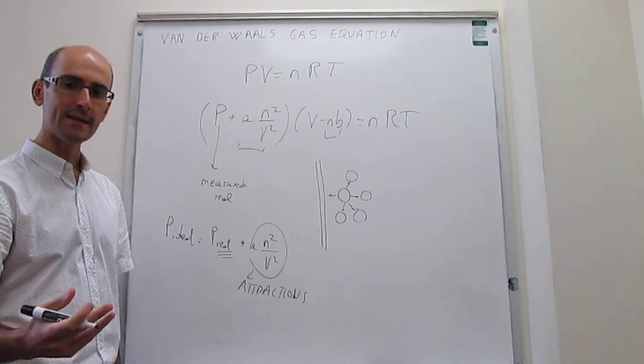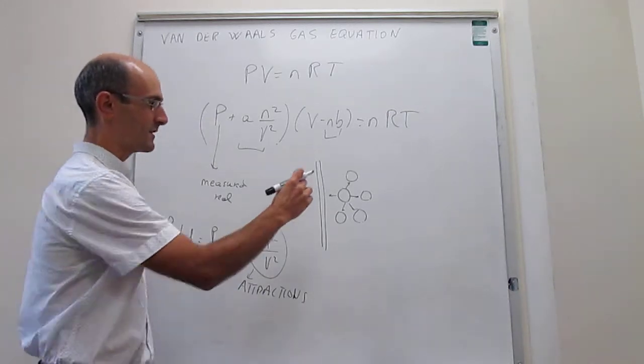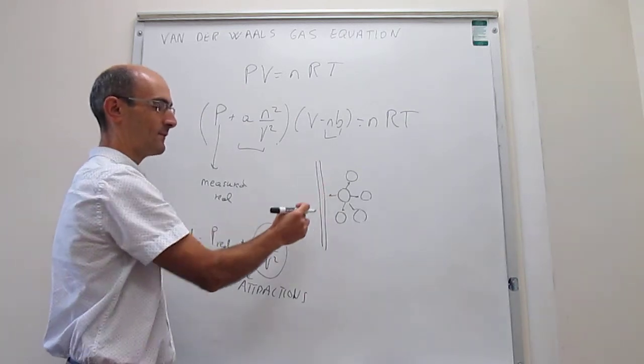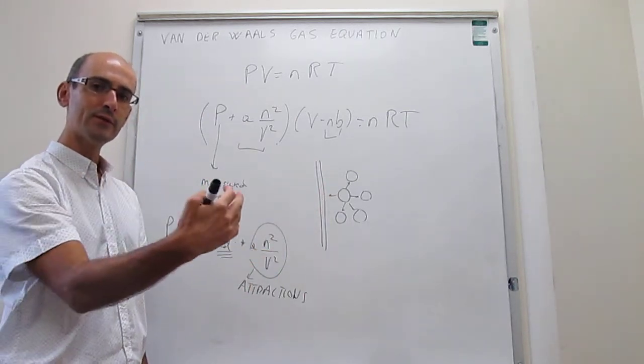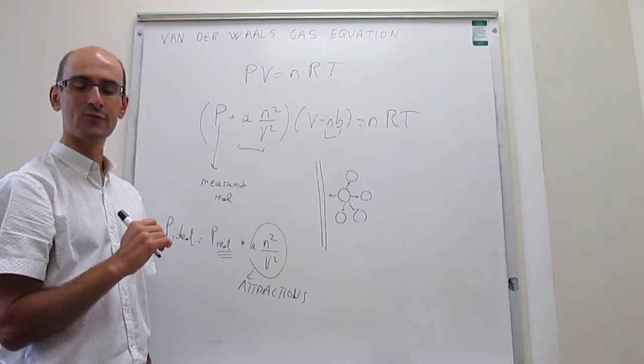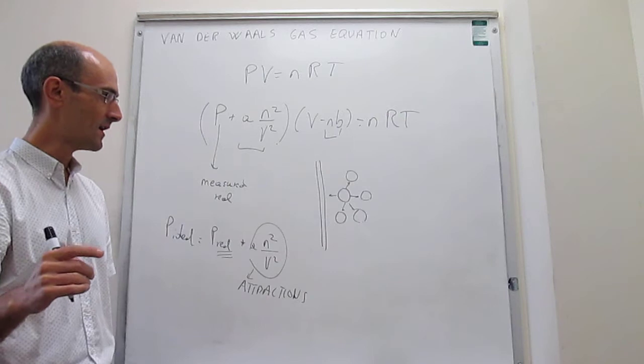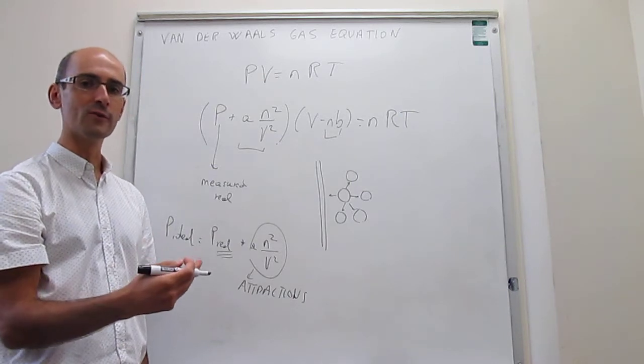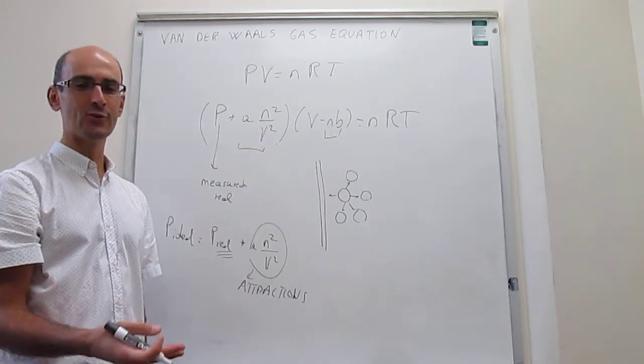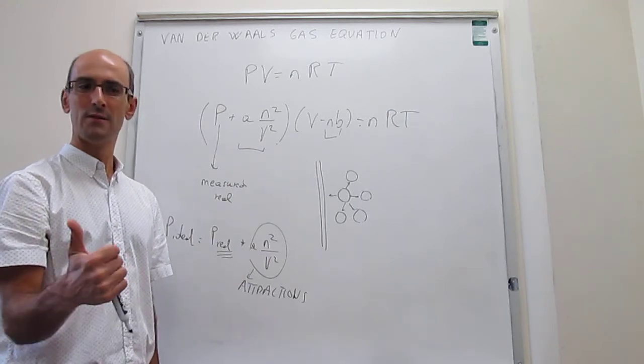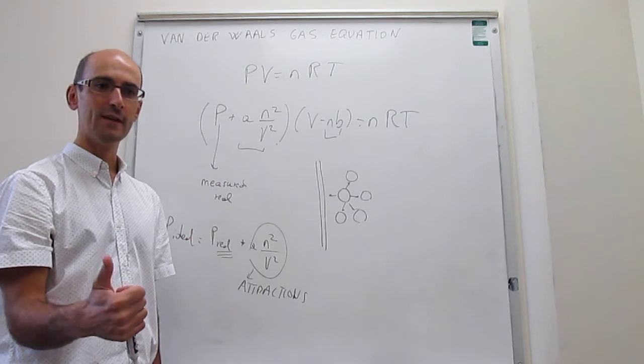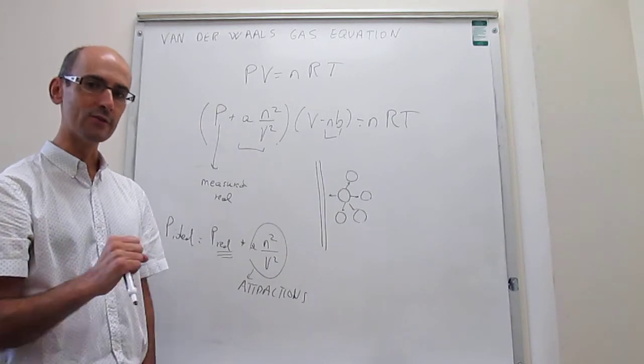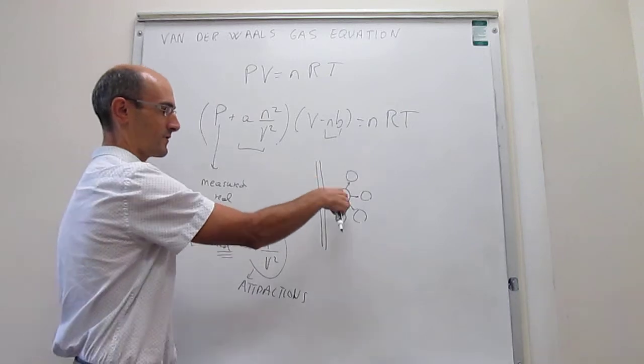And what you will see is that the pressure goes down for a couple of reasons. First, this attraction is going to reduce the kinetic energy of that particle that is about to collide with the wall, so that the pressure, the force exerted, is actually less than if those attractions were not there. Okay? That is one thing that happened. The other thing that happens is that you actually, by the presence of these molecules, you have fewer molecules or particles on average collide with that wall. Okay? So you're actually reducing the pressure for two reasons.